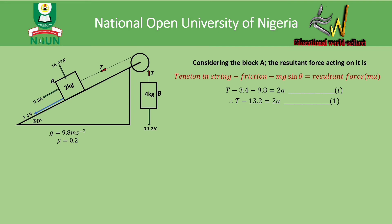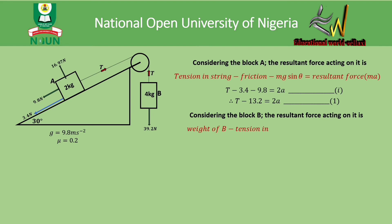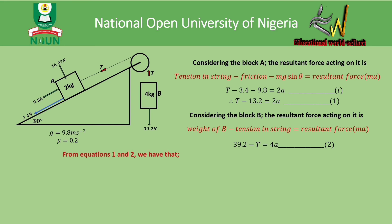For block B, the weight of the block would cause it to fall freely under gravity, but the tension in the string opposes the downward motion, resulting in a controlled acceleration. The resultant force equation for block B is: weight minus tension equals mass times acceleration — that is, 39.2 − T = 4a. We call this equation two.